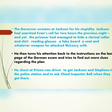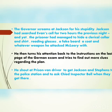The governor screams at Jackson for his stupidity. Jackson had searched Evans' cell for two hours the previous night, and yet the prisoner had managed to hide a clerical collar and shirt, reading glasses, a fake beard, a coat, and whatever weapon he used to attack McClary. They are analyzing the cell, awestruck at how Evans had safely kept all these items hidden inside.